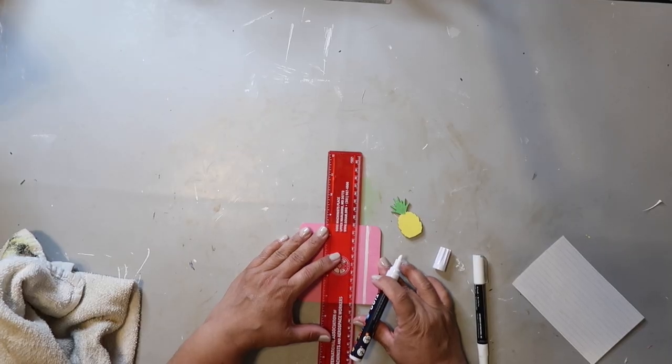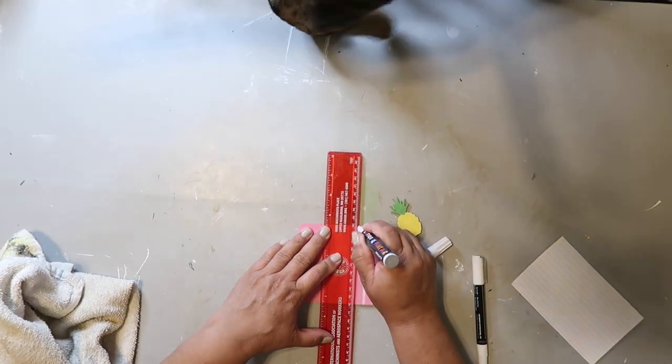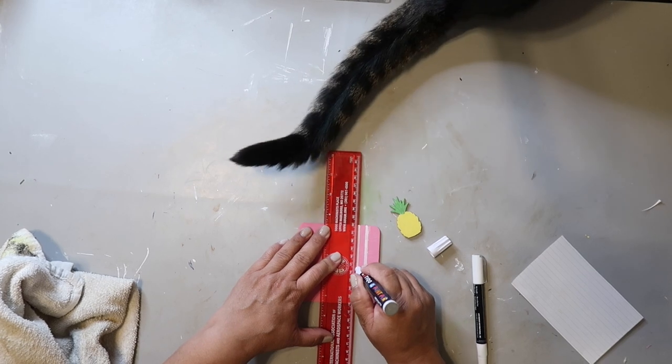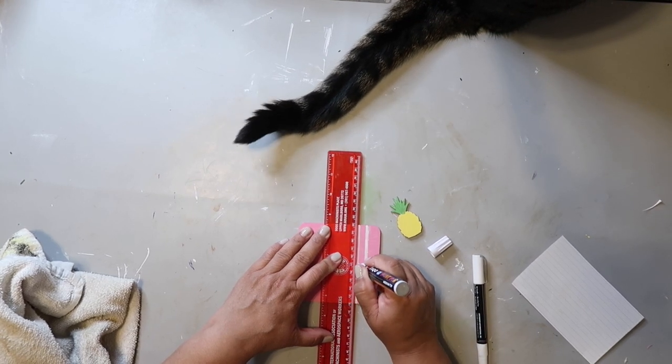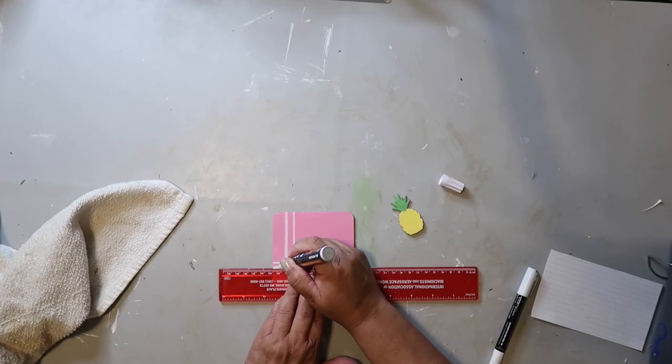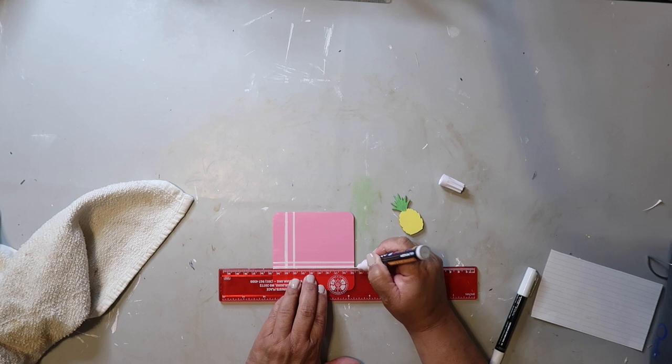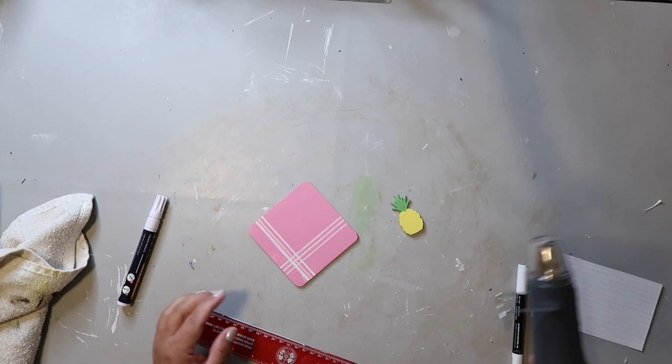And here I'm just using a ruler to kind of keep the lines straight as possible. You guys know that I'm not super fussy about things being perfect, but I do like it to be kind of straight. Now I'm just going across with those lines and I'm wiping off that ruler in between so it doesn't smear it or hopefully doesn't smear it.